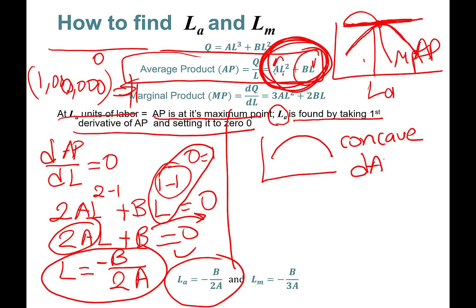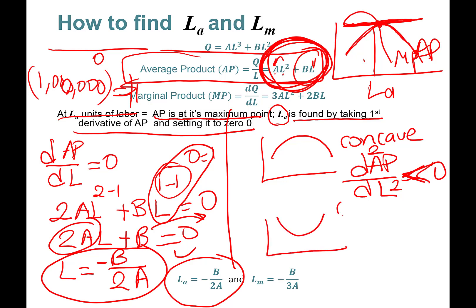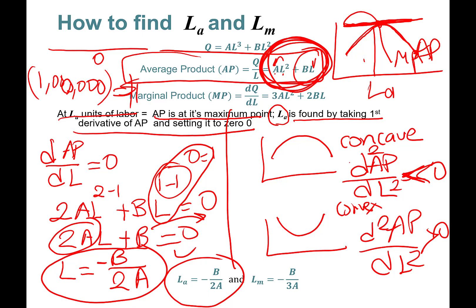The second derivative needs to be negative — not equal to zero, but strictly negative. For a convex curve, the second derivative is positive. For a concave curve — like an upside-down bowl — the second derivative needs to be negative. Just keep this in mind.